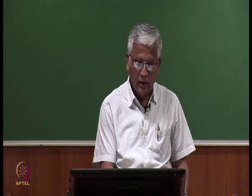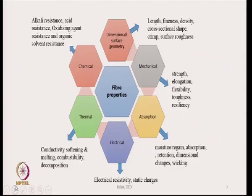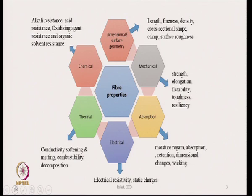Properties under dimensional or surface-related categories include length, fineness, density, cross-sectional shape, crimp, and surface roughness. Friction can also be included here as another surface property, though it is not exactly dimensional but is related to surface phenomena.